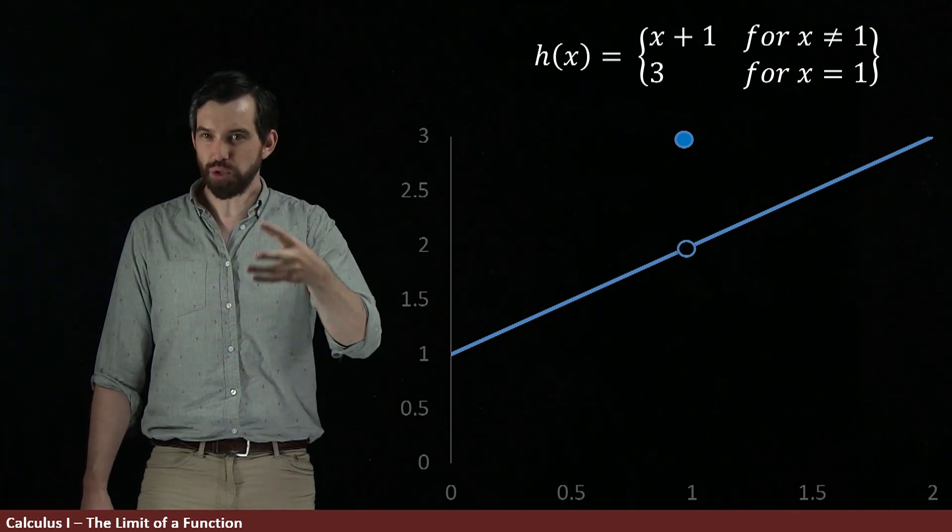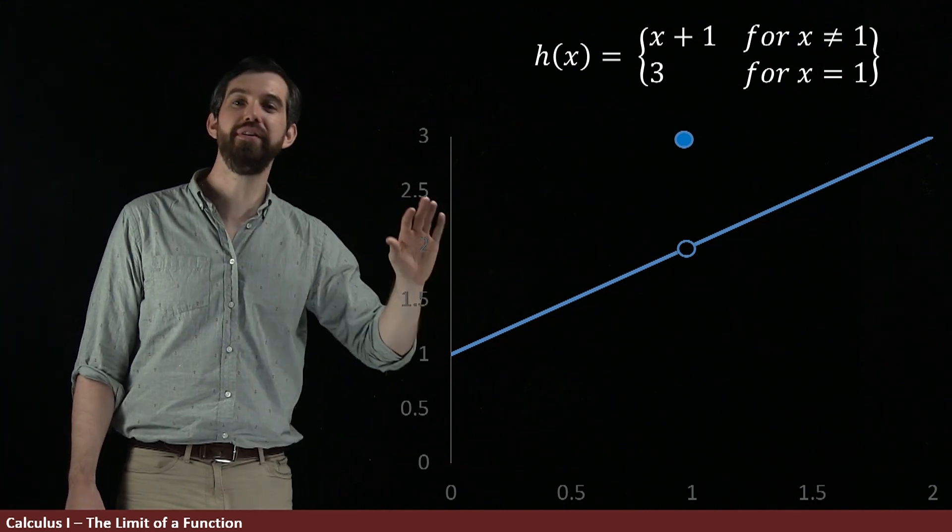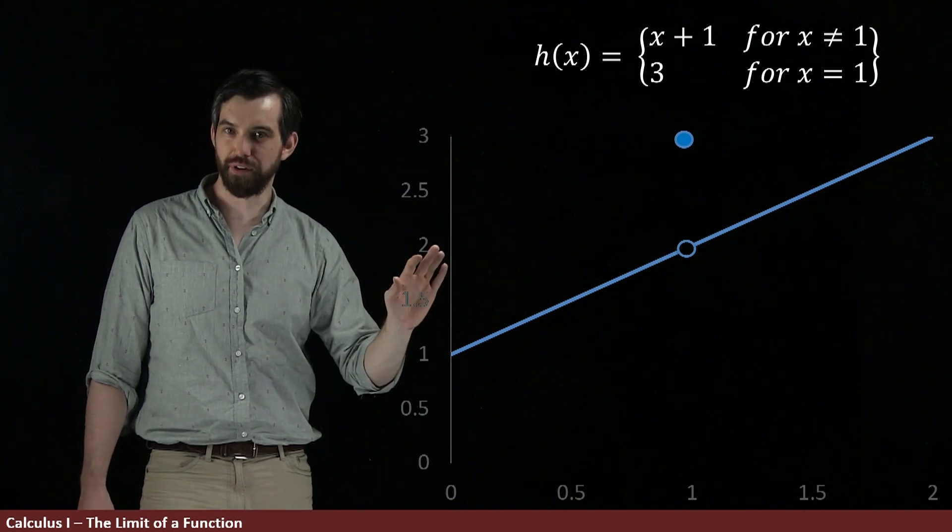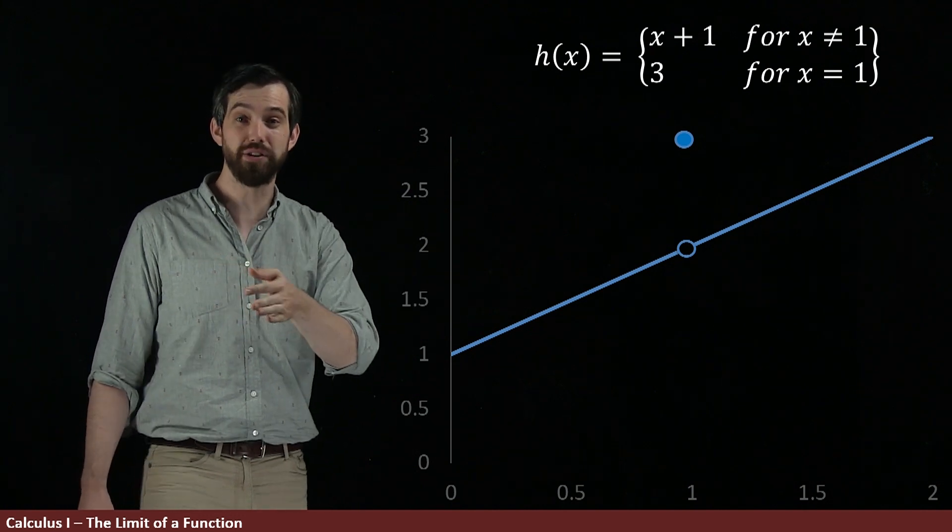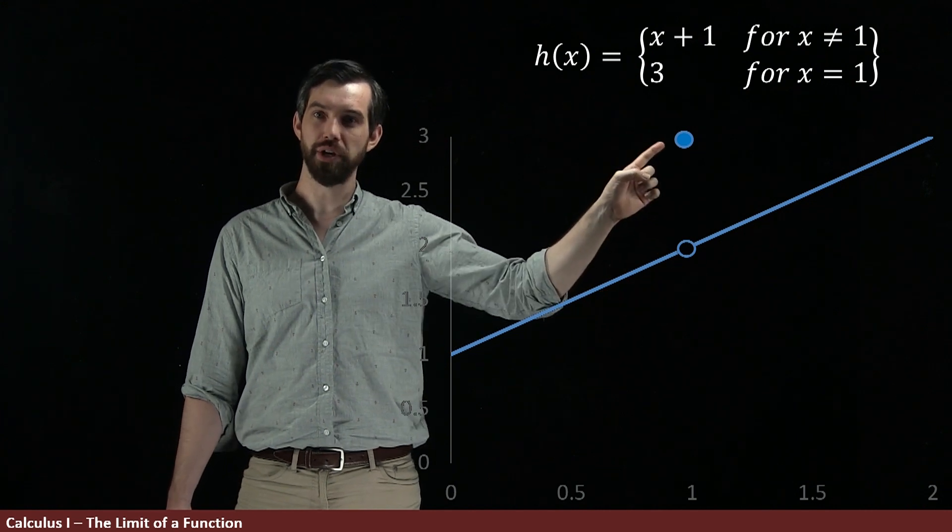So, this so-called piecewise defined function, again, looks very, very similar to f of x, but a little bit different, and a little bit different from g of x as well. g of x only had the open hole, but did not have the closed in dot.